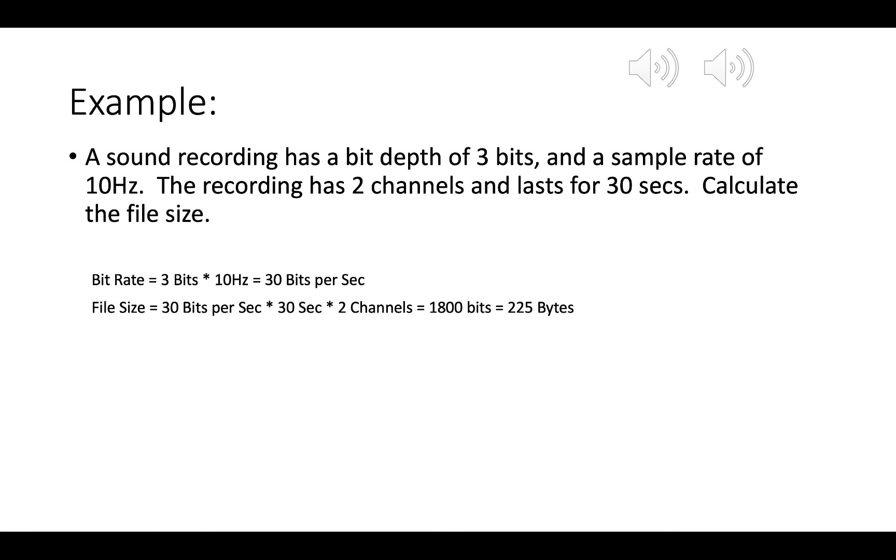Then we were told that we have two channels, and that the music lasts for 30 seconds, and that from my bit rate, I know that's 30 bits per second. So the total file size is going to be 30 bits per second times 30 seconds times two channels, which gives me 1800 bits in total. And then I divide that by eight to get 225 bytes.